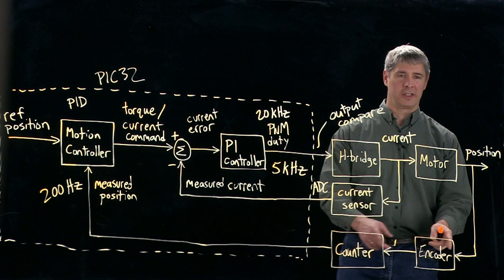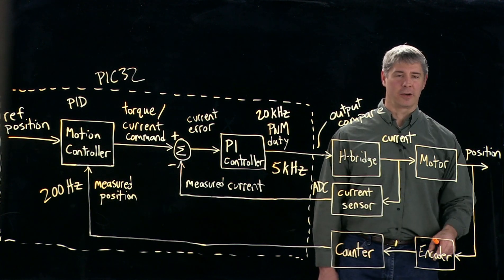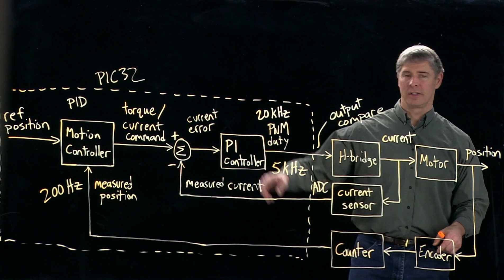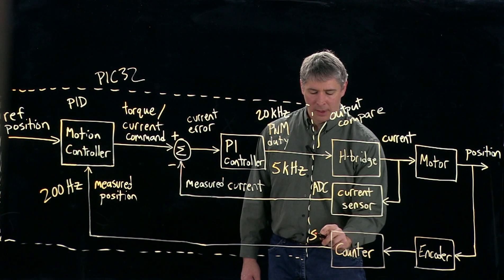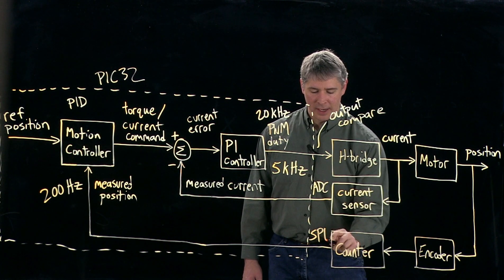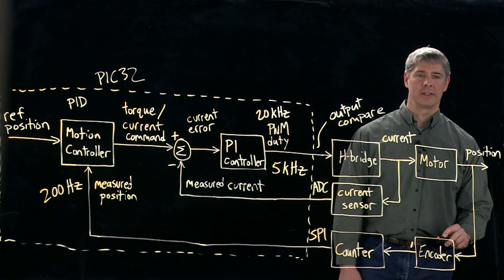It's a microcontroller that its only job is to read the encoder counts and to provide the encoder counts to the other microcontroller. And the way it's going to do that is over a communication channel that uses SPI, Serial Peripheral Interface.